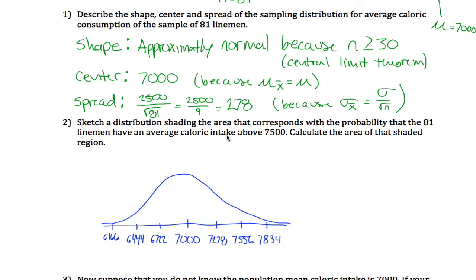What do we want? Sketch a distribution shading the area that corresponds to average caloric intake above 7,500. So 7,500 is somewhere in here. We're talking about this area right here.